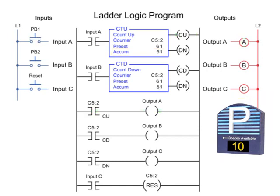Cars exit the garage by pressing PB2 to open the gate. The CTD instruction is decremented by one and the visual display is updated.